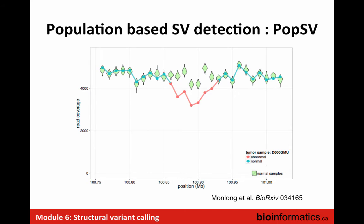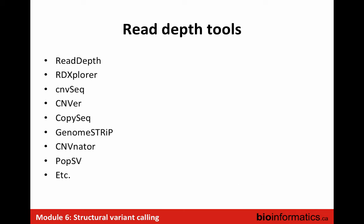One challenge that a student in my group has addressed is that coverage tends to vary across the genome quite a bit. By using multiple normal samples as a reference baseline and then looking at the amount of coverage in a specific sample of interest, it becomes easy to see when a region is an outlier. But this is just one of many approaches for applying read depth to detect copy number. It's not a trivial problem, especially in repetitive regions, where there's still a relatively high rate of false positives.